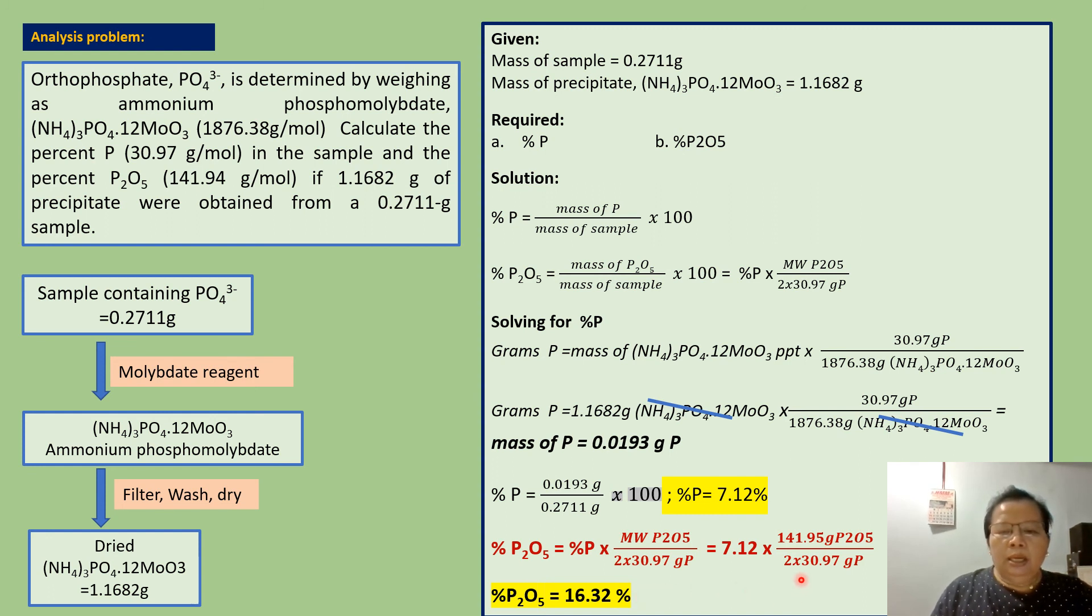Notice I multiply grams phosphorus by 2 because 1 mole of diphosphorus pentoxide contains 2 moles of phosphorus.